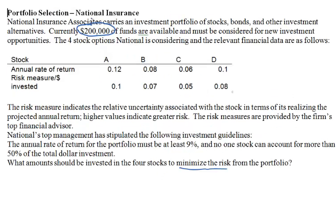We are given that there is $200,000 to invest, and there are four stocks to invest in. For each stock, we are given the annual rate of return and the risk measure per dollar invested. The risk indicates the relative uncertainty of the stock price. If the stock price fluctuates a lot, then you have a stock with higher risk. A stock with low price fluctuations has a lower risk. Stocks with a higher return tend to come with higher risk.